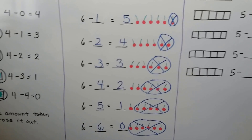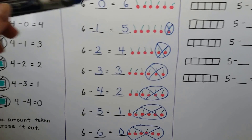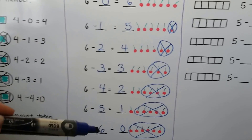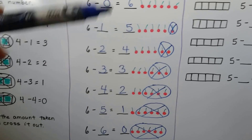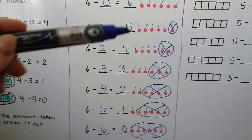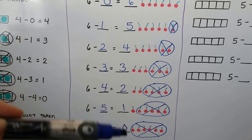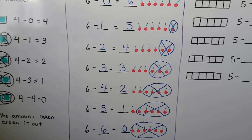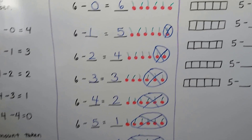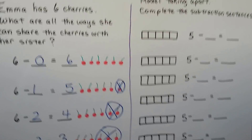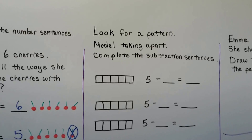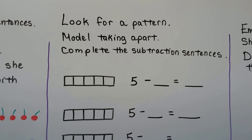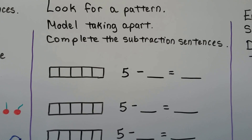Do you see what the numbers are doing? 0, 1, 2, 3, 4, 5, 6 and then 6, 5, 4, 3, 2, 1, 0. Do you see that? We can look for a pattern and model taking apart and complete the subtraction sentences.